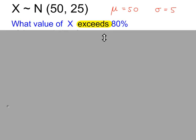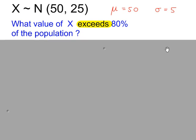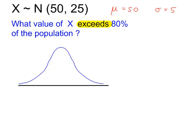What value of x exceeds 80% of the population? Start off with a sketch. We have the standard normal variable z, which has a mean of 0.